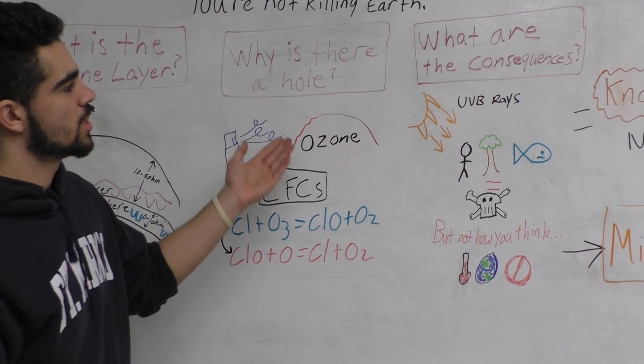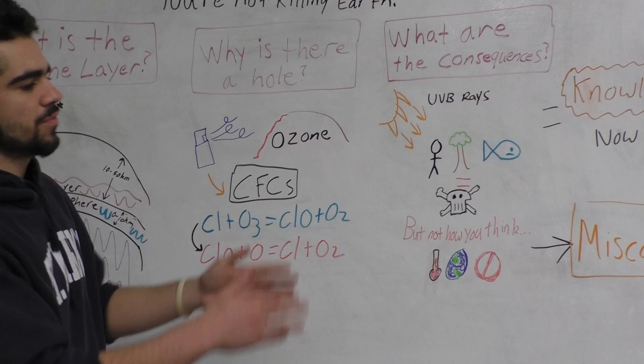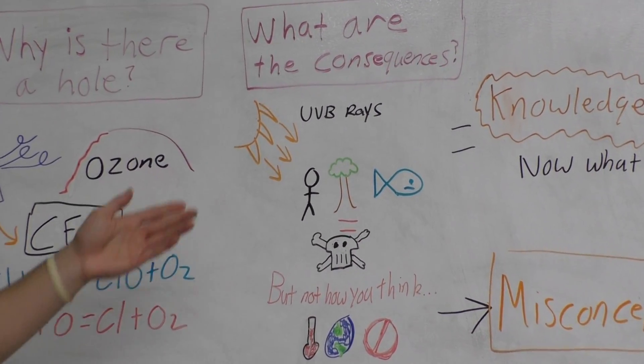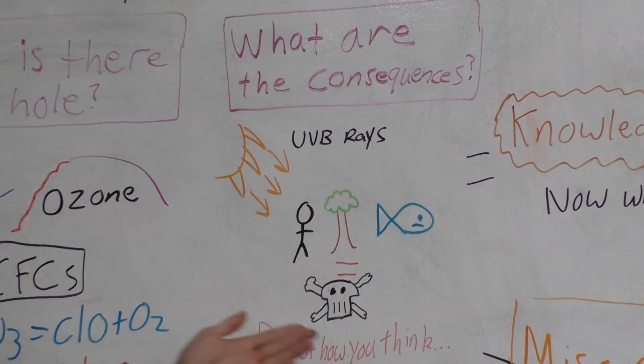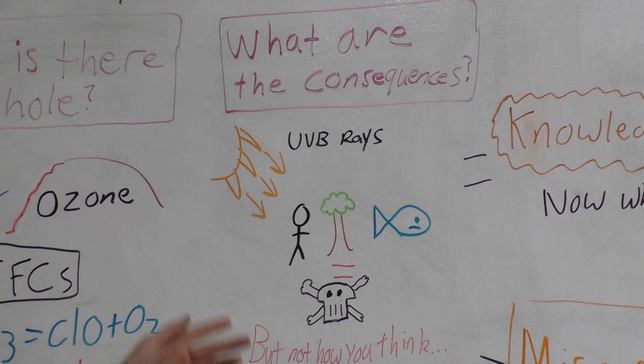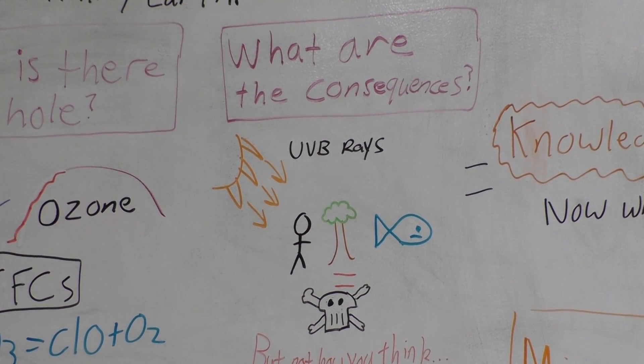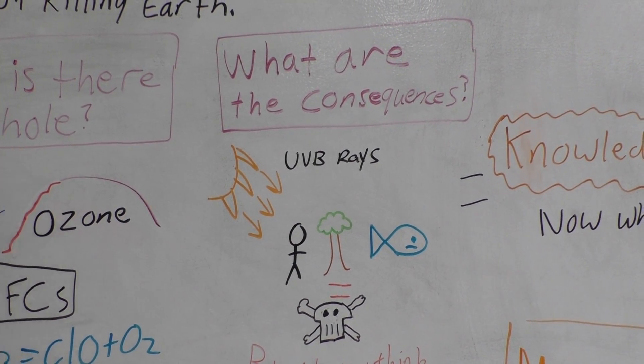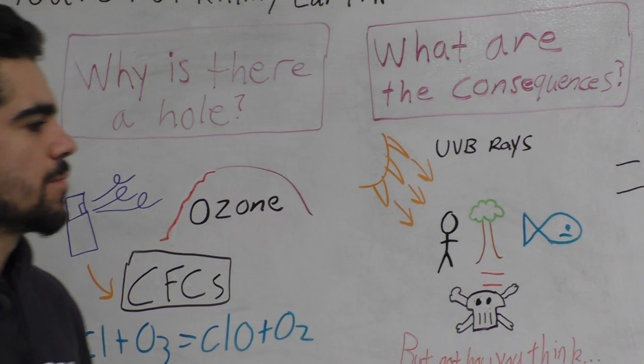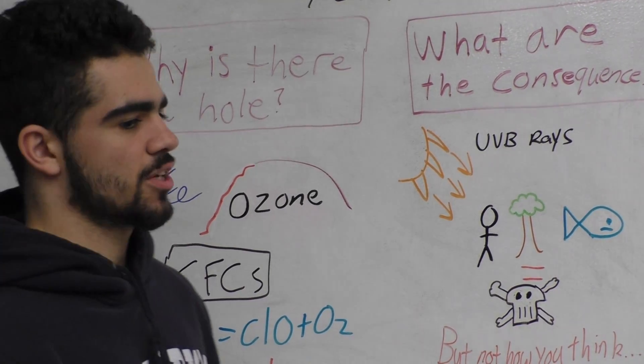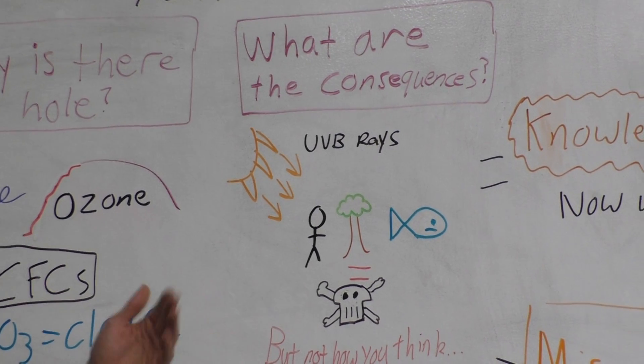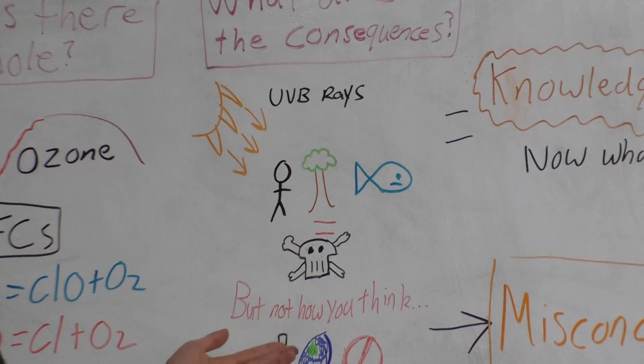Say we have this depleted area inside the atmosphere where extra UVB rays can enter and hit the Earth's surface. What are the consequences of that? Well, the consequences of extra UVB rays in higher concentration that hit the Earth is cancer, genetic mutations, cataracts, and other sun-related factors that can affect health in a negative way.